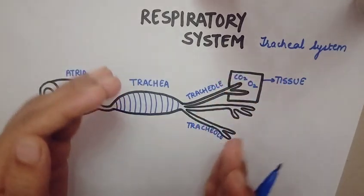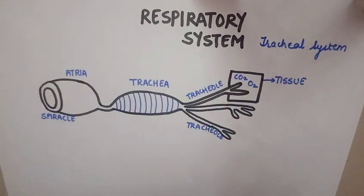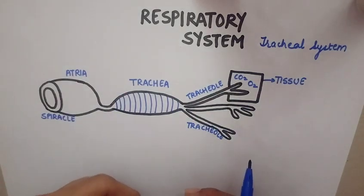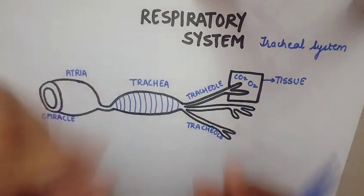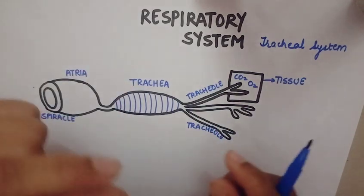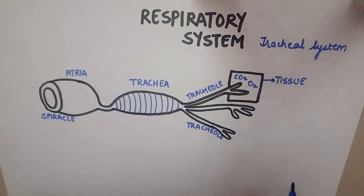On the ventrolateral surface of the cockroach, there are openings present. These openings are present in pairs — paired openings on the ventrolateral surface.